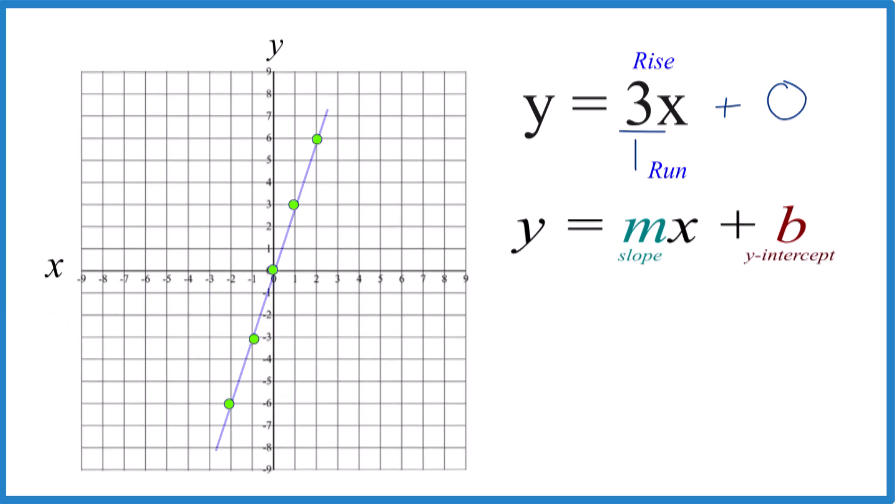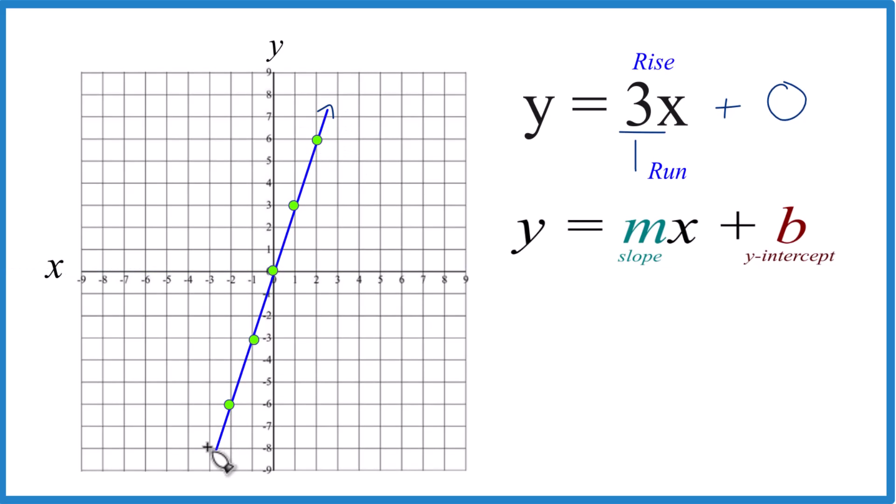There's our line. Let's put a line through that. Then we'll put arrows, show it goes to infinity. And this is the graph for the equation y equals 3x using slope-intercept form.